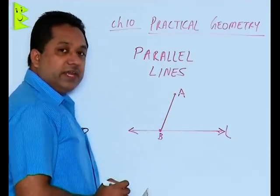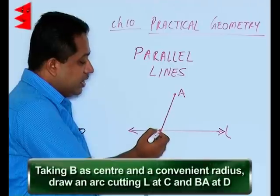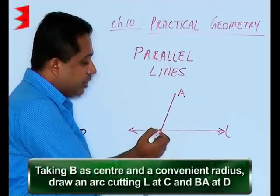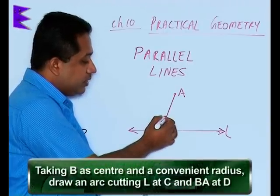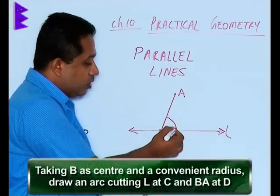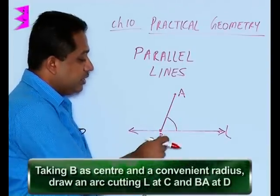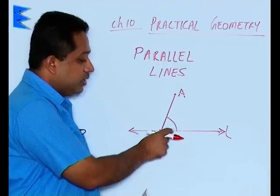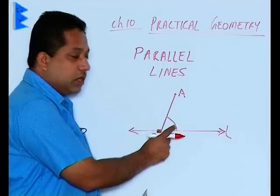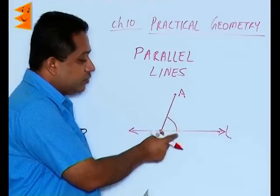Now you have to take the compass. Taking any radius, keep the compass at point B and draw this arc here. This can be with any radius. You will take the compass, put the compass point here, extend the pencil outwards, taking any radius you are drawing this arc.